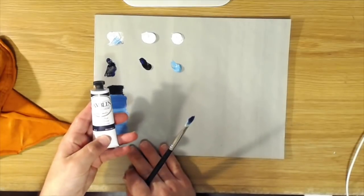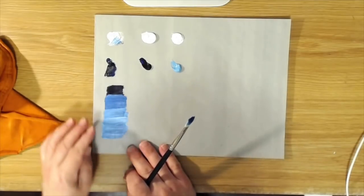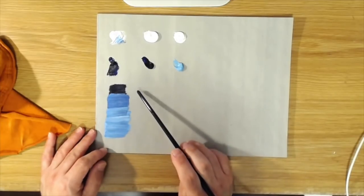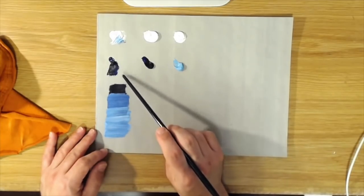This particular one I'm using here is Gamblin Prussian blue, again it's pigment blue 27.